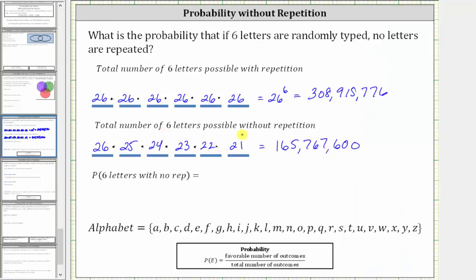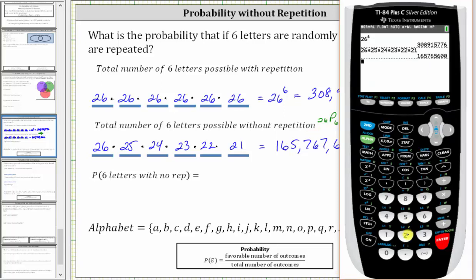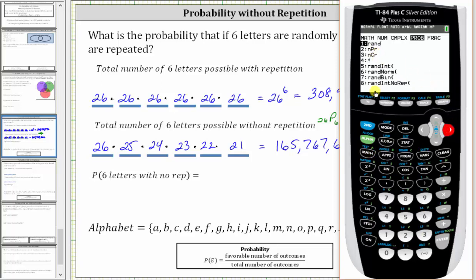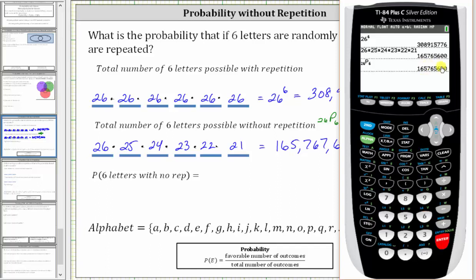I also want to mention we could have found the number of six-letter sequences without repetition using a permutation. This is also equal to 26 permute 6. Let's verify this on the calculator: enter 26, math, right arrow to probability, select option two for permutation, and then enter six. Notice how we get the same value of 165,765,600.